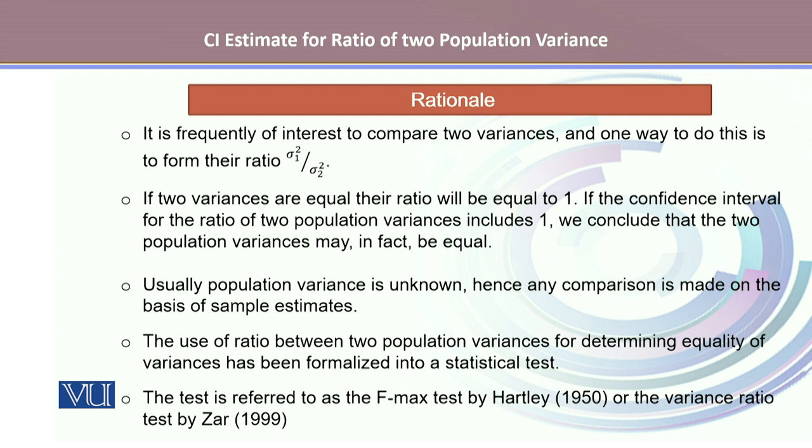This test is referred to as F-max test by Hartley that was given in 1950, or the variance ratio test that was named by Zahr in 1999 in his book.